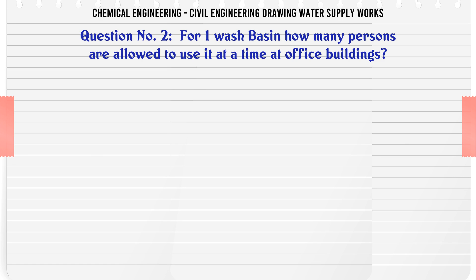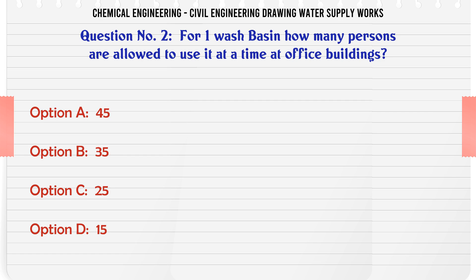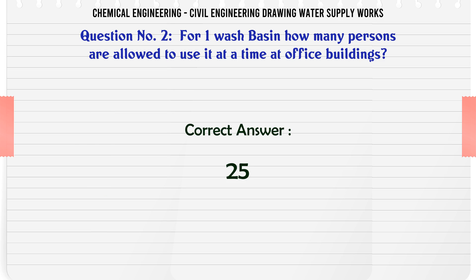For one wash basin, how many persons are allowed to use it at a time in office buildings? A. 45, B. 35, C. 25, D. 15. The correct answer is 25.